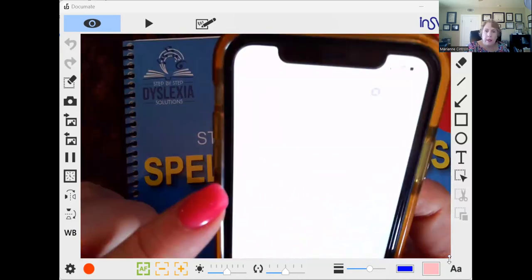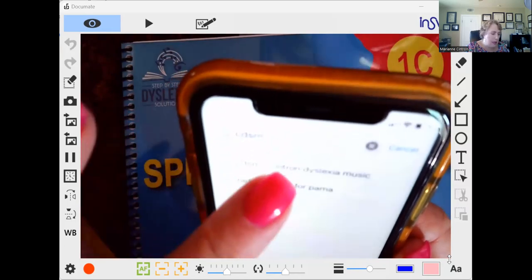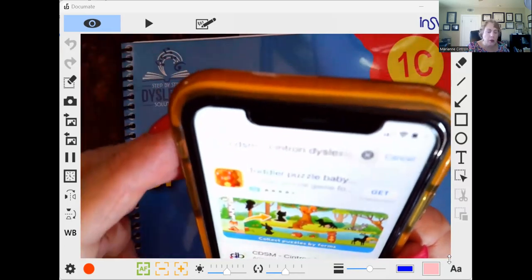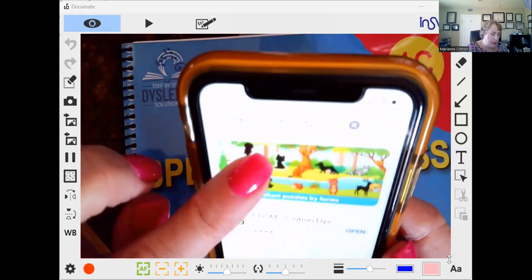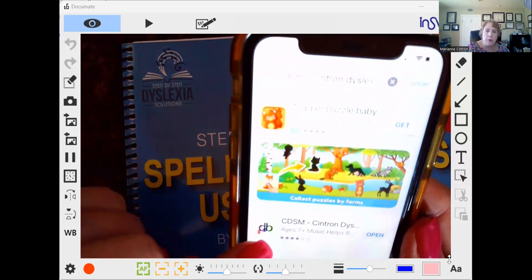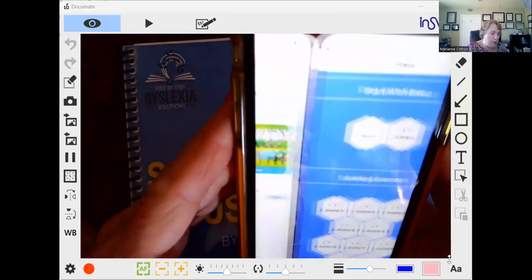And what should pop up is Cintron Dyslexia Music. I had limited words that I could put in there, limited characters. So scroll down just a little bit, and you'll see a D and a B reversed with my logo, my app logo. Click open.